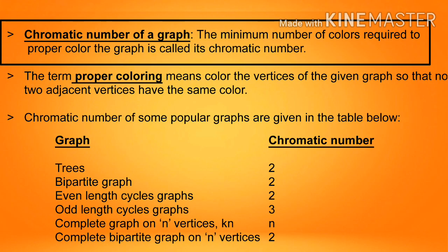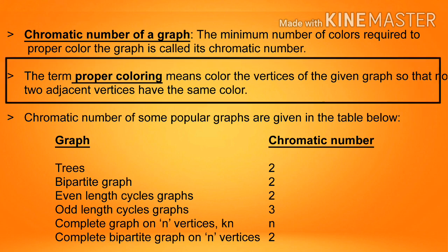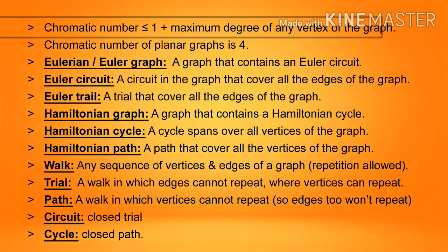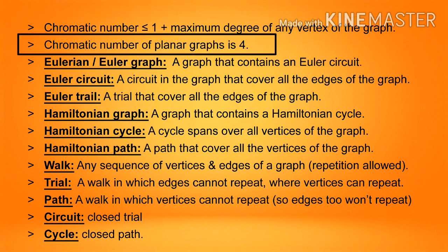Chromatic number of a graph: the minimum number of colors required to properly color the graph is called its chromatic number. Proper coloring means coloring the vertices so that no two adjacent vertices have the same color. Chromatic numbers of some popular graphs: trees = 2, bipartite graph = 2, even-length cycle graphs = 2, odd-length cycle graphs = 3, complete graph Kn = n, complete bipartite graph = 2. Chromatic number of a planar graph is 4.